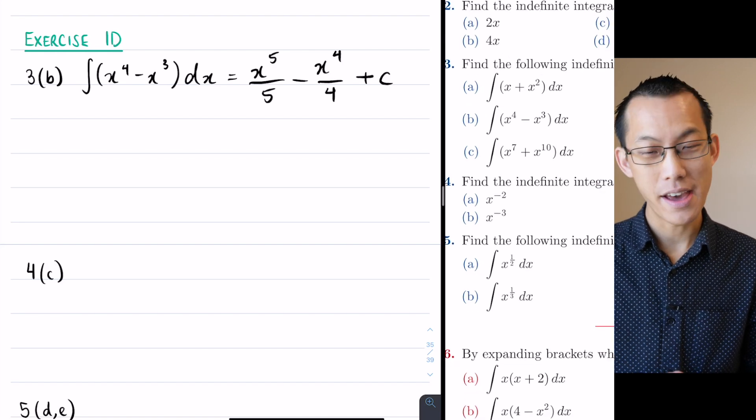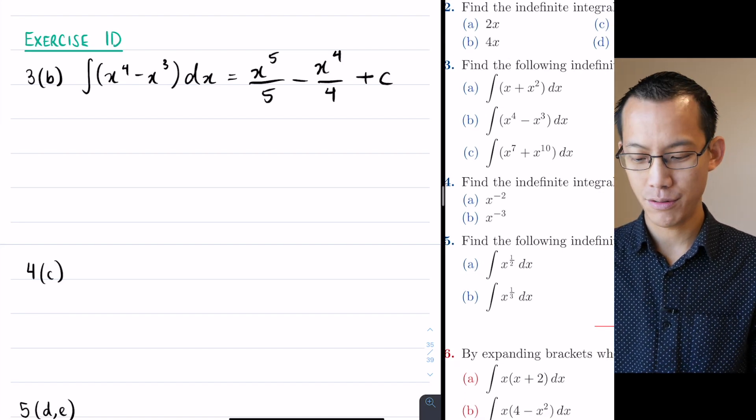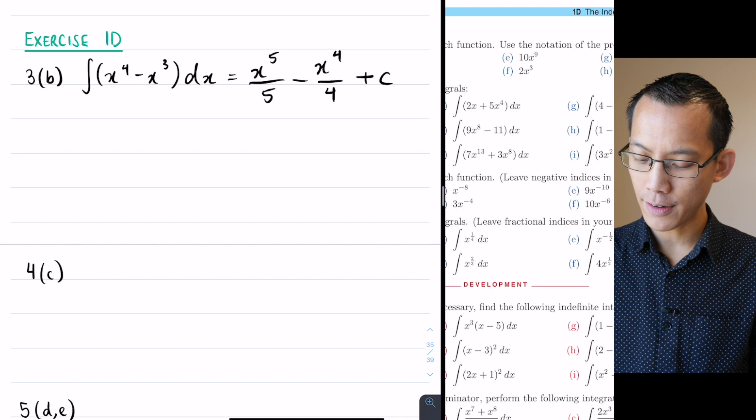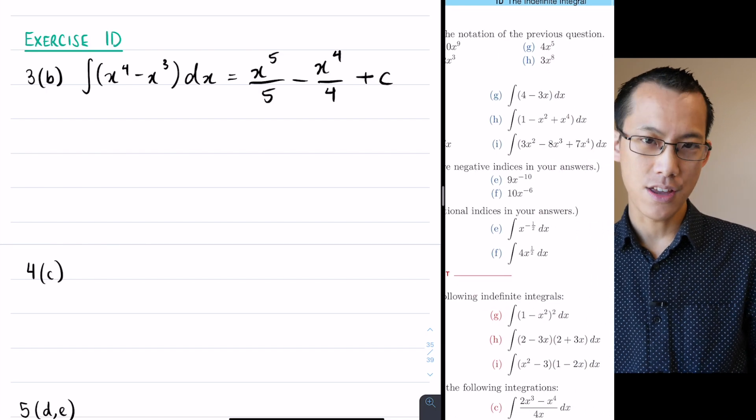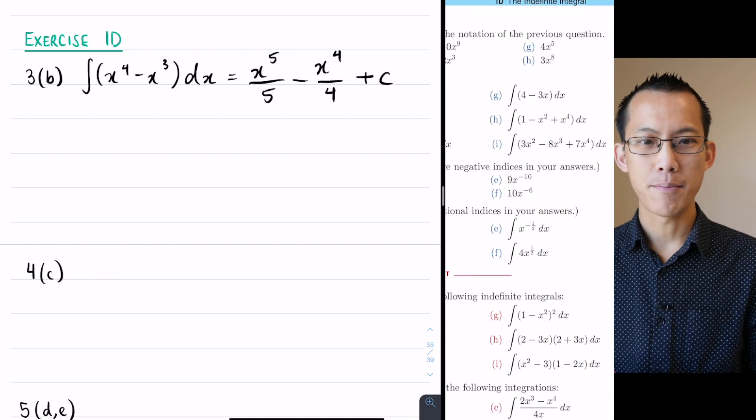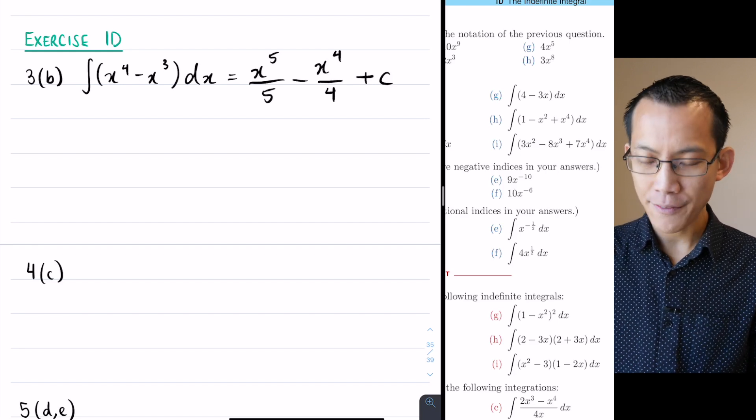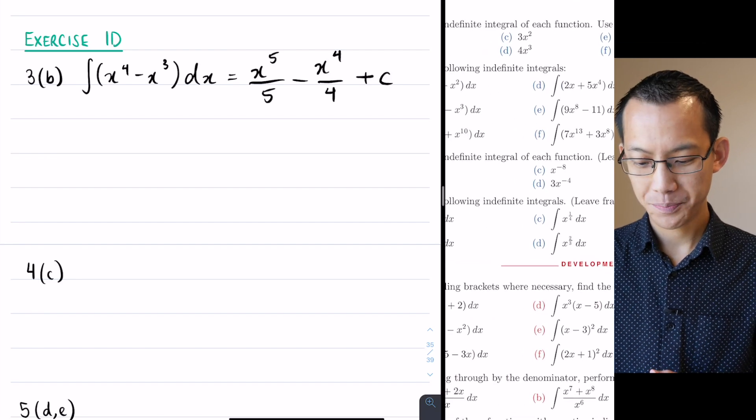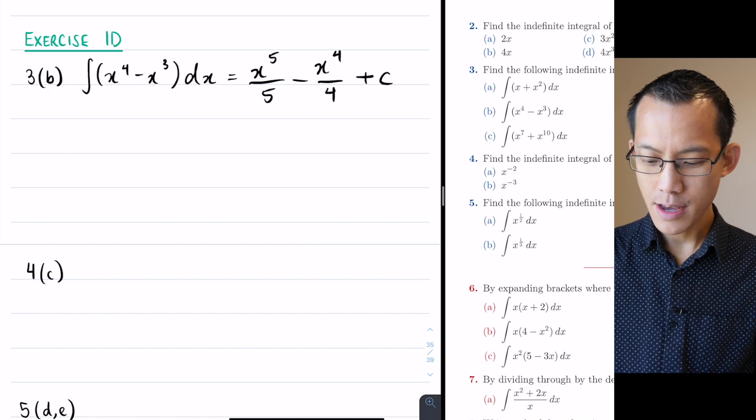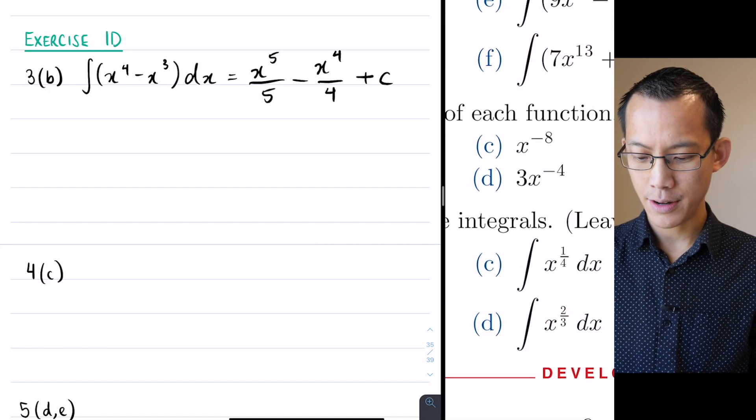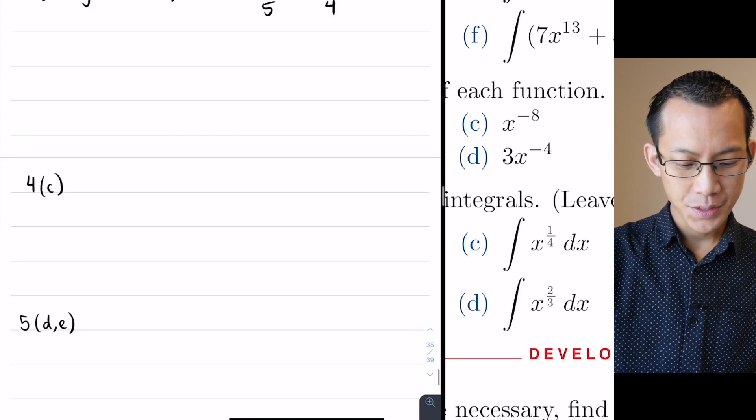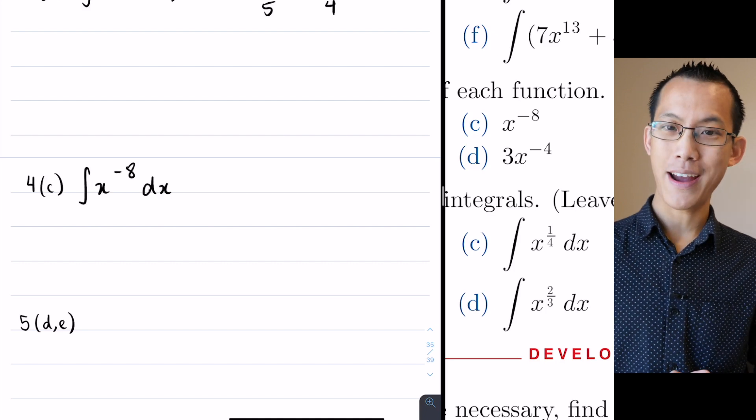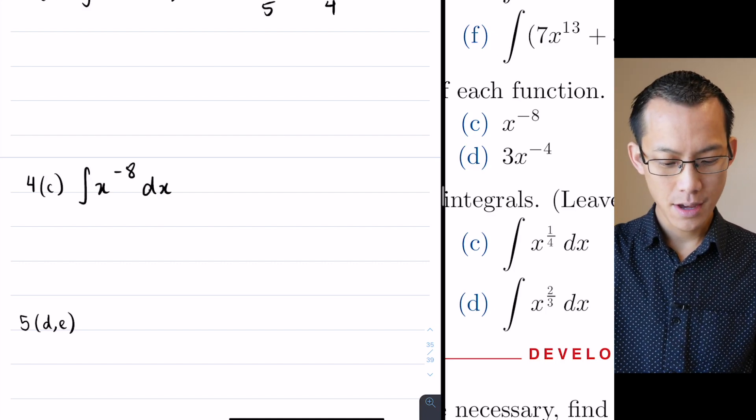Let's have a look at the next question down where we're seeing this applied to negative indices. So question 4 says find the indefinite integral of each function, and this one has said leave negative indices in your answers. Often the question will be provided to you just as a fraction, but they have given us negative indices here, so when we take an integral here we're going to leave the negative indices in place. So the example I want us to have a go at was 4c. There it is, x to the power of negative 8.